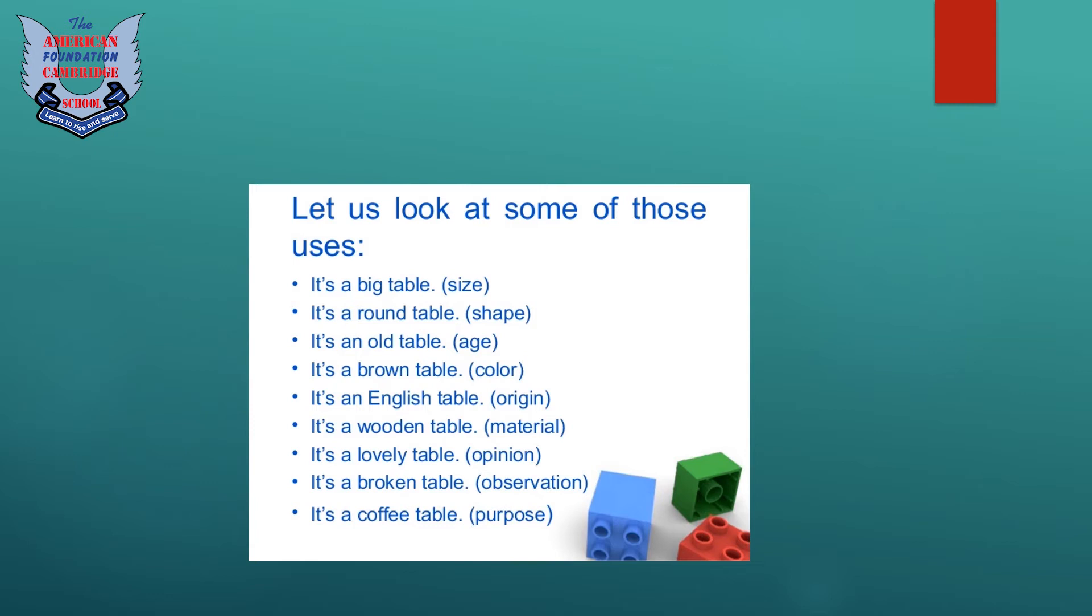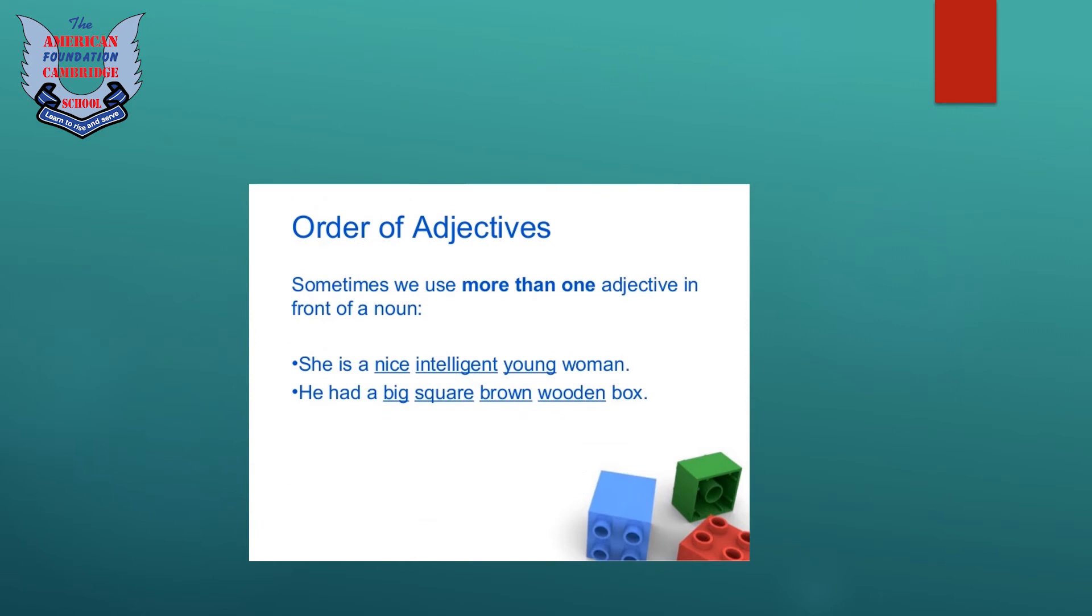Now the order of adjectives. Sometimes we use more than one adjective in front of a noun. Suppose she is a nice, intelligent, young woman. Now in this sentence you can see we are having three adjectives: nice, intelligent, young. They are in some order. This is the rule of order of adjectives that we have to write the adjectives in front of a noun in an order. Another sentence is: he had a big, square, brown, wooden box.